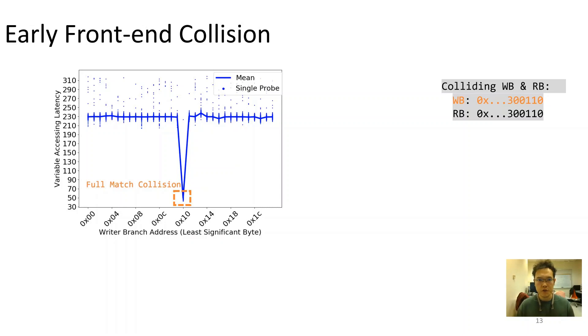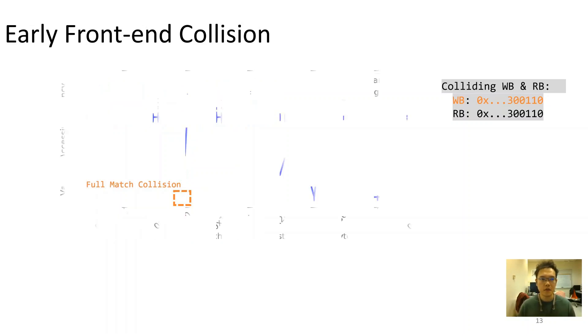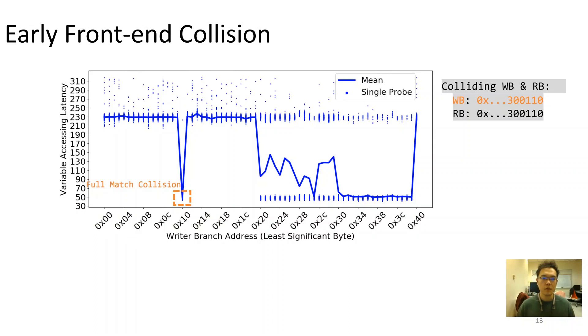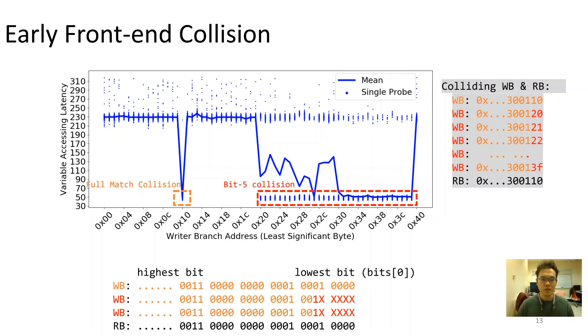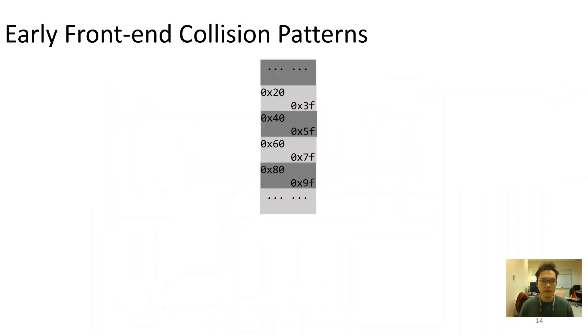During our reverse engineering work, we also observed additional collision anomalies. In particular, multiple writer branches at a consecutive space can collide with a particular reader branch in a closed region. The figure shows that, in addition to the fully matching address, writer branch addresses that have different bit 5 and arbitrary lower bits could also collide with the same reader branch.